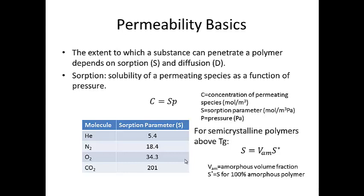The sorption parameter is not truly constant — it varies as a function of several things, one of which is microstructure. Amorphous polymers have a lower packing efficiency than crystalline polymers. Therefore, the sorption parameter S is proportional to the volume fraction of the material that is amorphous, times the sorption parameter for a 100% amorphous polymer.